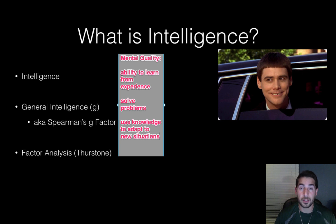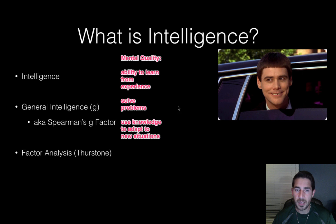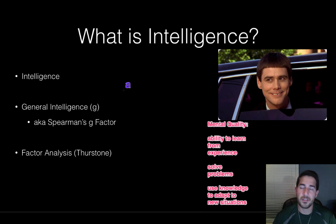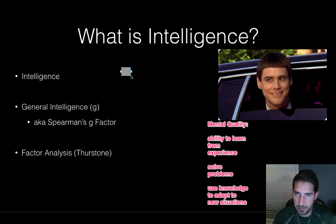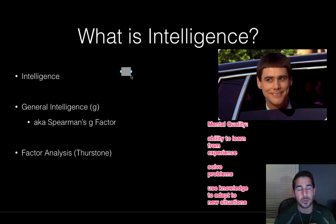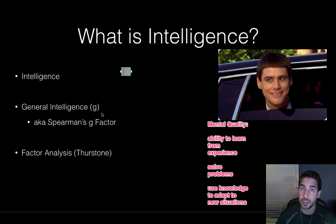We'll talk about multiple intelligences in a bit. First, we're going through a few different people and their theories of intelligence. The first is Spearman, who had Spearman's G factor, or general intelligence. Basically, Spearman said people have this underlying level of intelligence that affects everything they do. So somebody who's really intelligent will be able to learn math more quickly, and even if they're not good at history, their high general intelligence means they'll learn history more easily than someone with lower general intelligence.